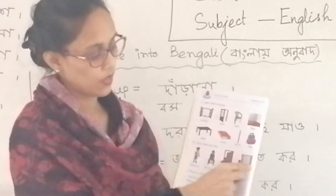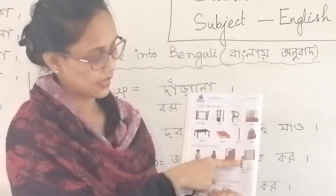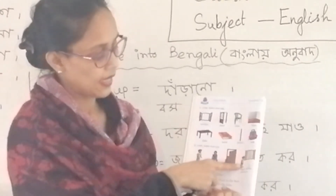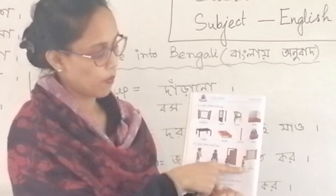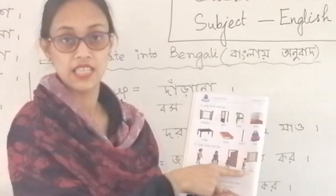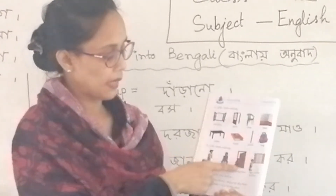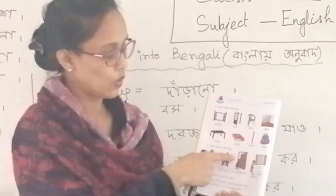তারপো দাখো, একটা ছেলে কী কী করছে - জানালাটার চিহ্ন হিতো করছে, হাদ দিয়ে হে নিচে রাখাছে। To the Window - জানালাটি হিতো করো, ঠিকা ছে? এগোল আমাং কীয় হামাং শিকভো?